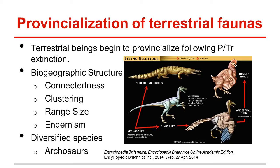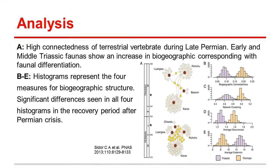One species in particular that was noticed to have been prominent in this time were the archosaurs. They were able to thrive in the next few million years after the Permian-Triassic mass extinction. The significant differences seen in connectedness, clustering, range size, and proportion of endemics indicate an increase in diversification and provincialization of terrestrial faunas during the Triassic period.